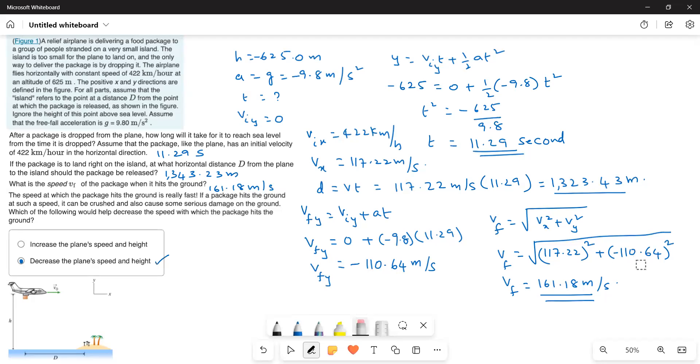when the speed decreases and then the time decreases, then here it has a soft landing. Now, it is a harsh landing. When we decrease the plane's speed and height, then it will land softly and then the package will not damage. That is the reason for this one. Hope this helps. Thank you. Bye-bye.